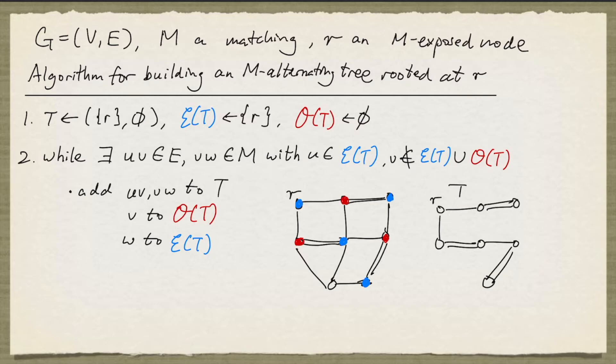Also, if you look at the way the even set and the odd set get built, each iteration we add one node to the even set and one node to the odd set. And since the even set begins with one node, the number of nodes in the even set at the end will be exactly one more than the number of nodes in the odd set.